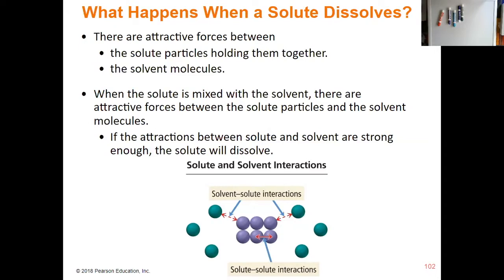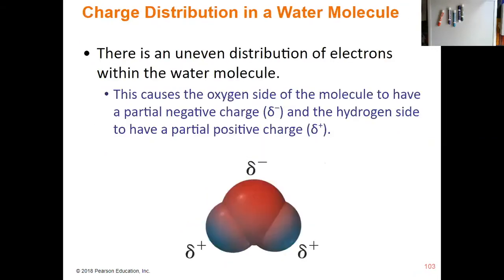When these two things start to mix around, there's going to be an attraction between the solvent and the solute particles — one that's going to be pulling the solute particles towards the solvent and vice versa. But there's also going to be solute-solute interactions that are still happening, and those are going to hold the solute together. When the solute-solvent interaction is strong enough — stronger than the solute-solute interaction — the solute starts to pull apart.